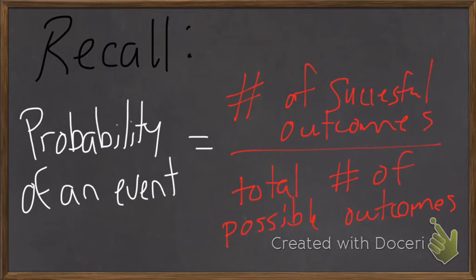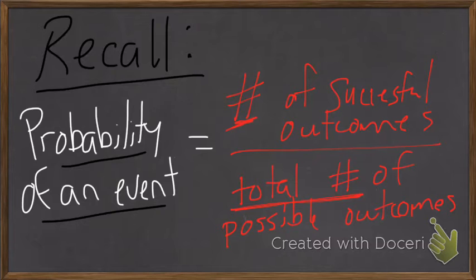So we recall from yesterday's video or last lesson, the probability of an event. We can always show this as a calculation in an equation. And it's known as the number of successful outcomes over the total number of possible outcomes.